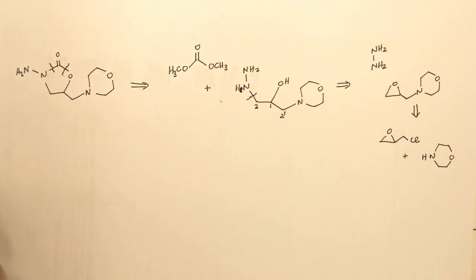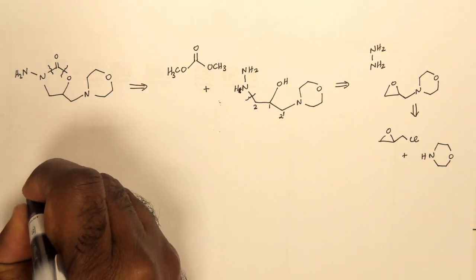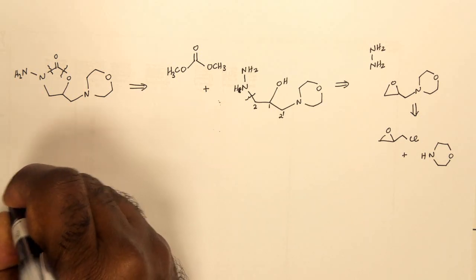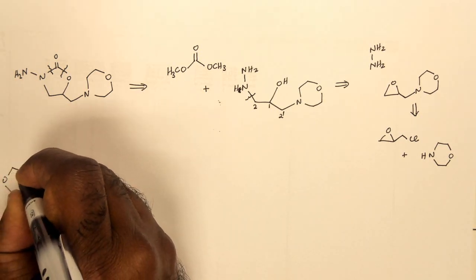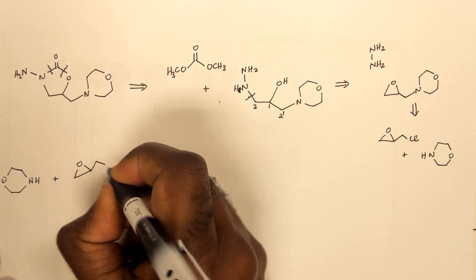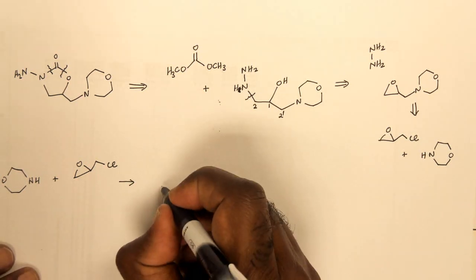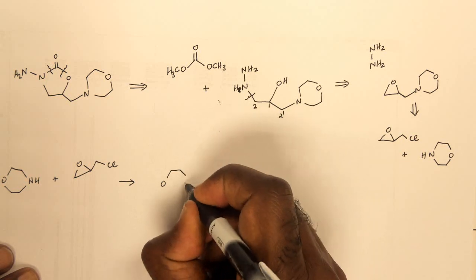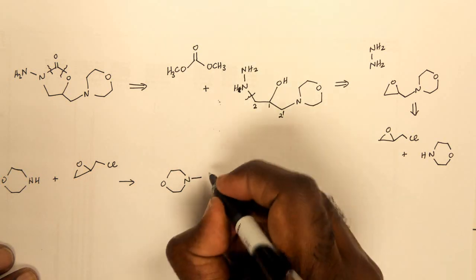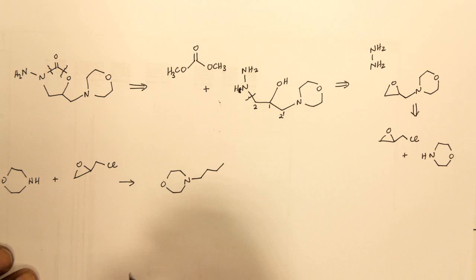Let's take a minute to look at synthesis. We would react morpholine with epichlorohydrin. On doing that, we would form your first intermediate. Remember your first intermediate has 3 carbon atoms. Keep the 3 carbon atoms intact.